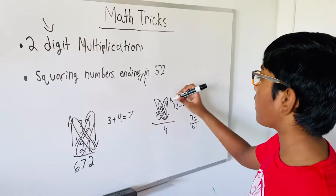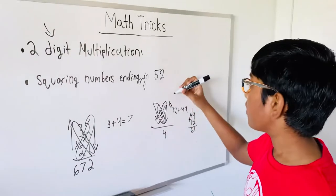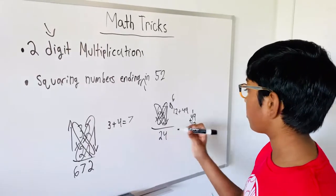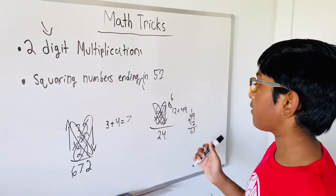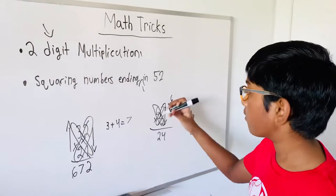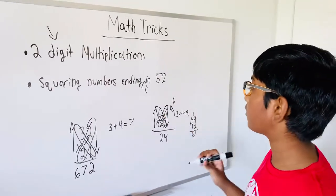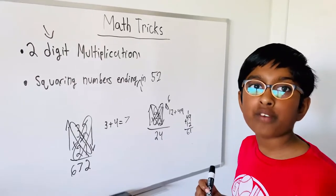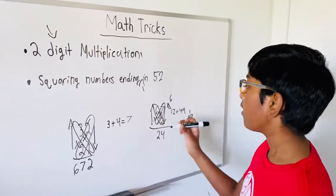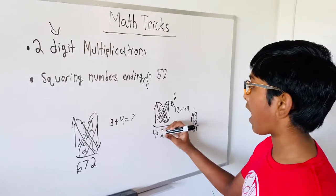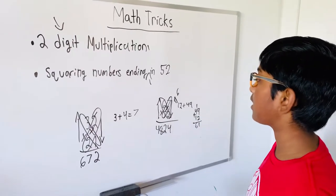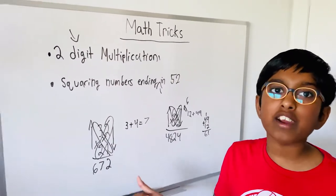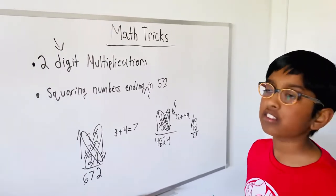So now we need to carry forward the six and write two there. Now we need to do six times seven, and the answer is 42. So we need to add 42 plus six, which equals 48. So the answer for 67 times 72 is 4824. It's so easy, right? You can just do it in less than 30 seconds.